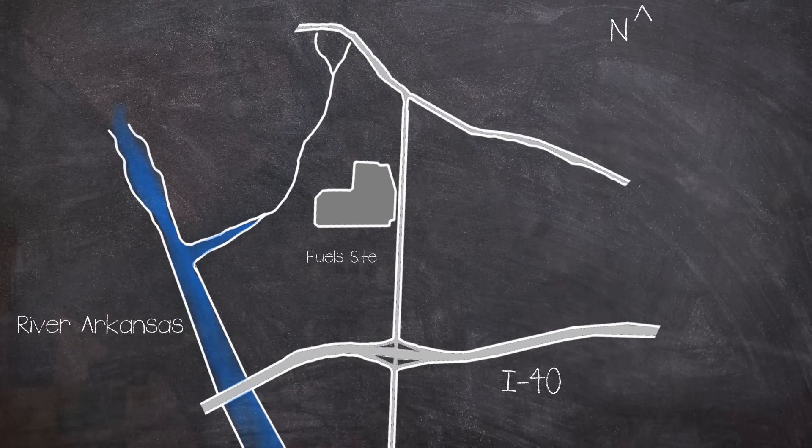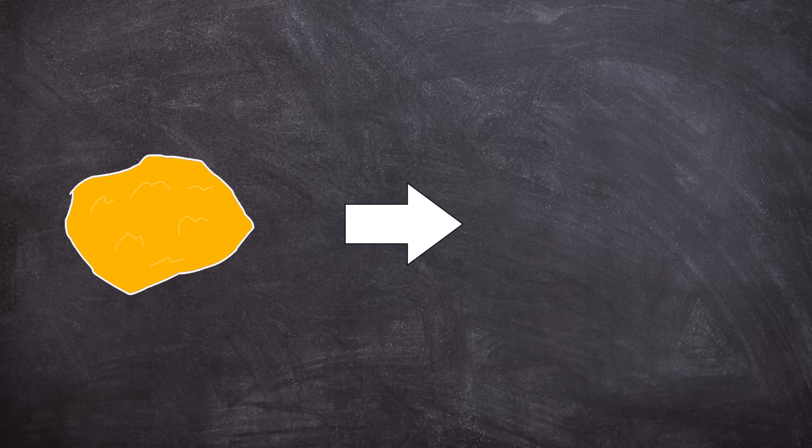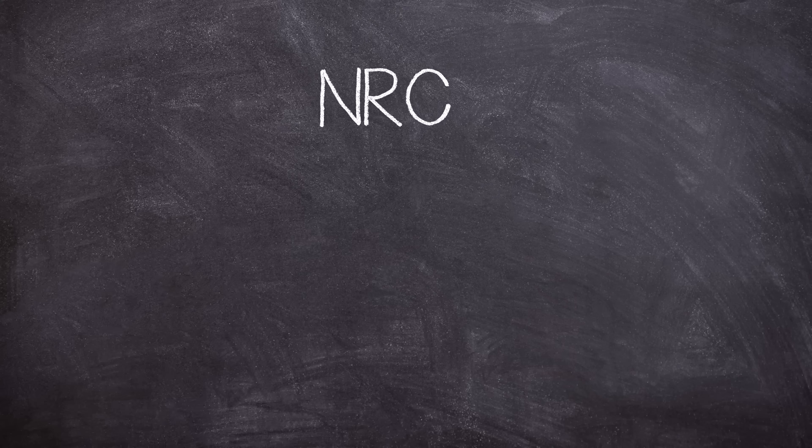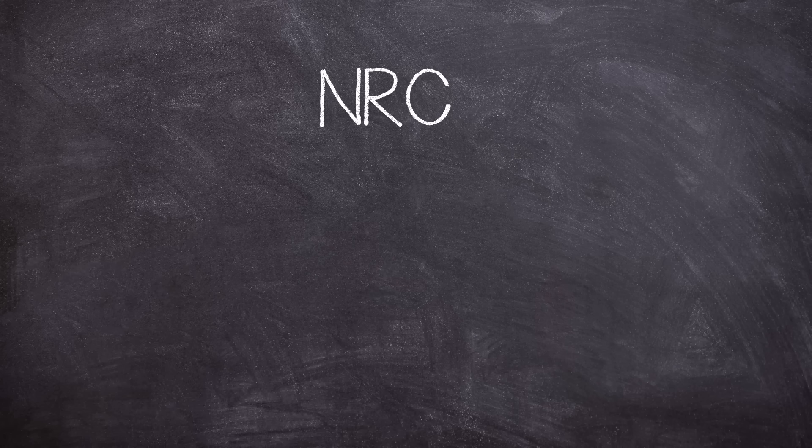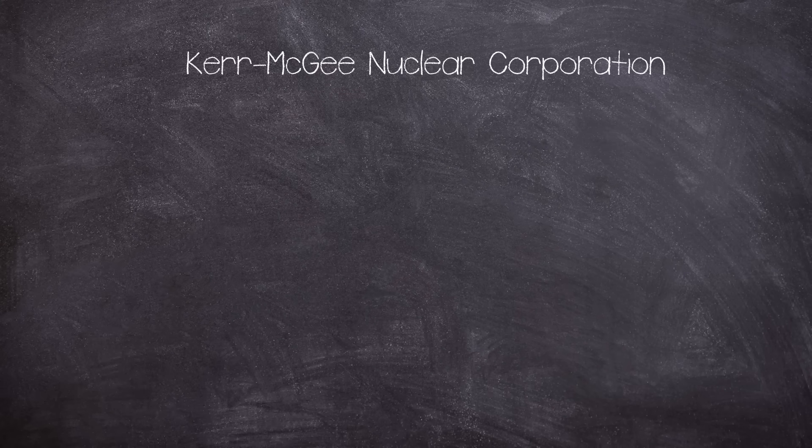The site was intended to be used to convert yellowcake into gaseous uranium hexafluoride and was licensed as a fuel cycle facility regulated by the Nuclear Regulatory Commission operated under Kerr McGee Nuclear Corporation. Production started on site in April 1970 with a conversion capacity of 4550 metric tons of uranium per year, working 24 hours a day with a four shift pattern. This subsidiary split into two companies in the early 1980s.